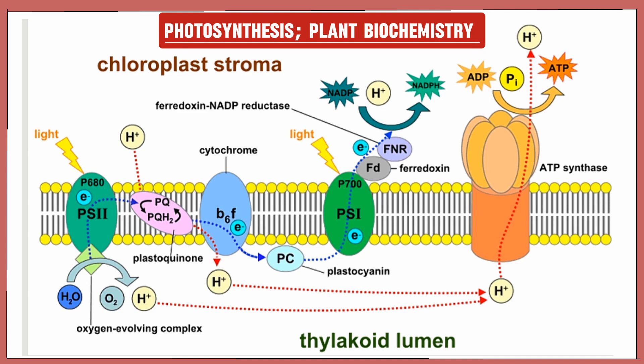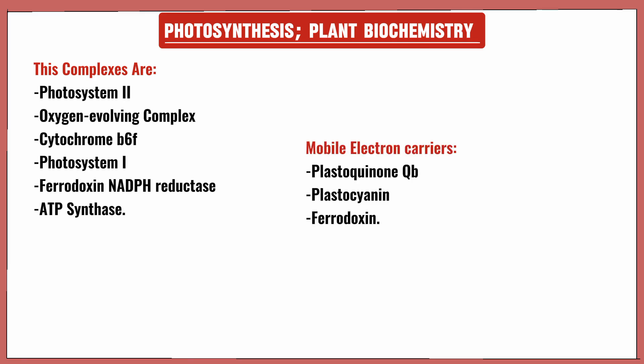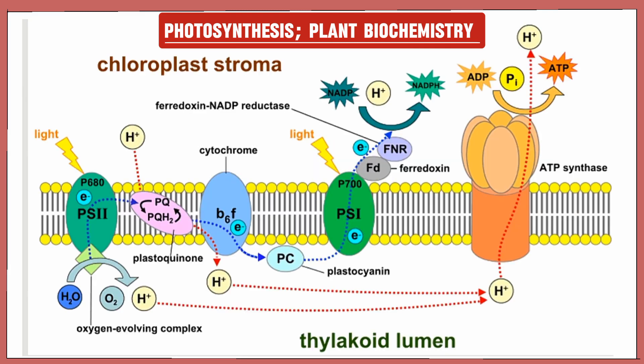Now let's understand the biochemistry behind it. The complexes you need to know are: Photosystem II, the oxygen-evolving complex, cytochrome b6f, Photosystem I, ferredoxin-NADPH reductase, and ATP synthase. The mobile electron carriers are plastoquinone QB, plastocyanin, and ferredoxin.